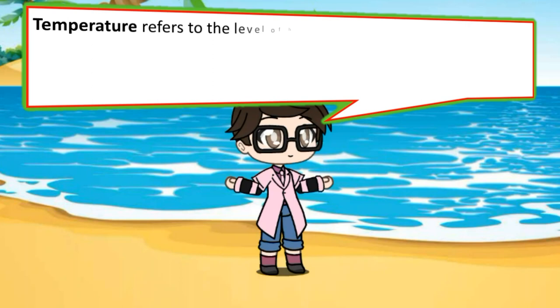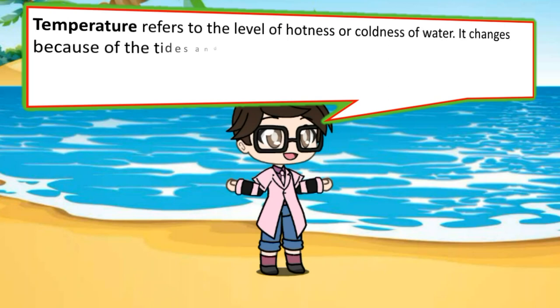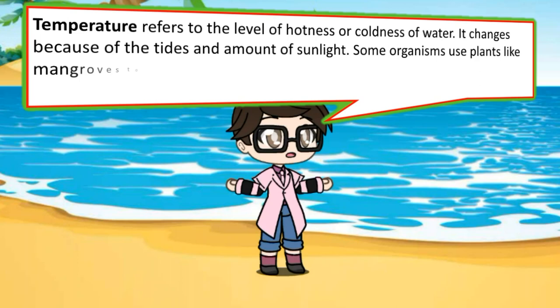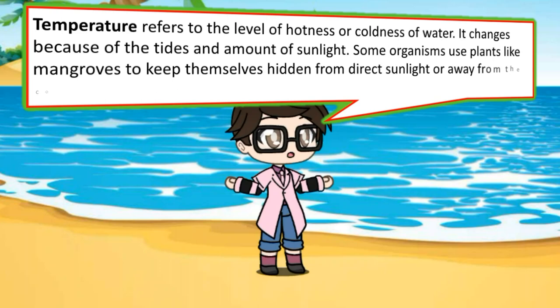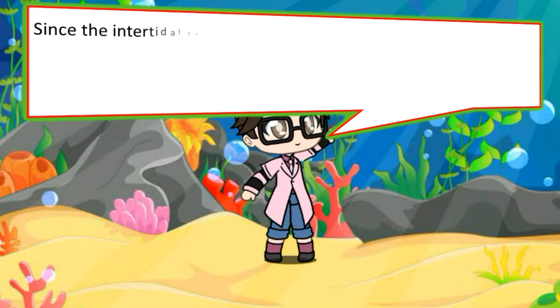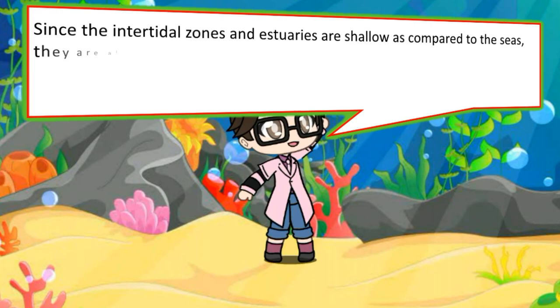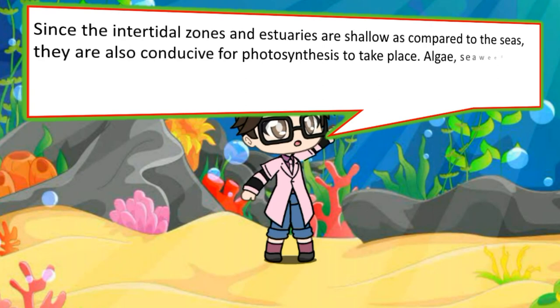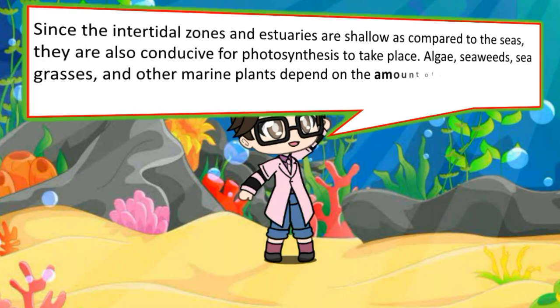Temperature refers to the level of hotness or coldness of water. It changes because of the tides and amount of sunlight. Some organisms use plants like mangroves to keep themselves hidden from direct sunlight or away from the coldness of water. Since the intertidal zones and estuaries are shallow compared to the seas, they are also conducive for photosynthesis to take place. Algae, seaweed, seagrasses, and other marine plants depend on the amount of sunlight they receive in the estuaries.